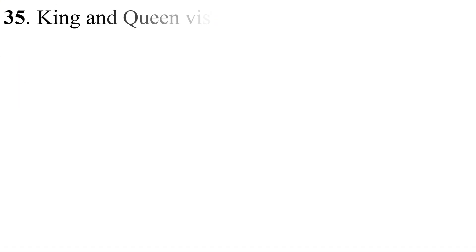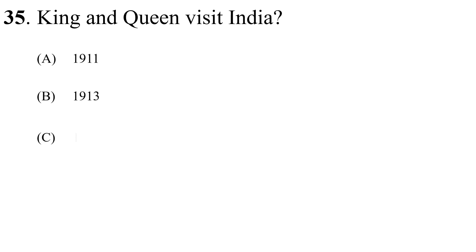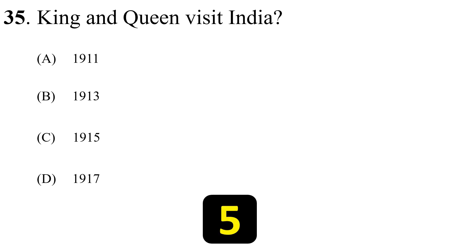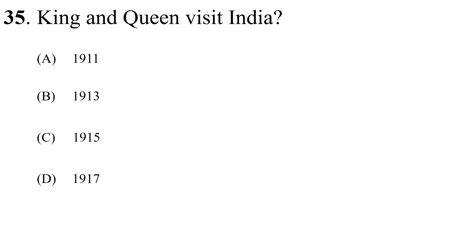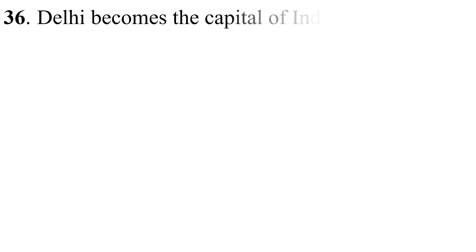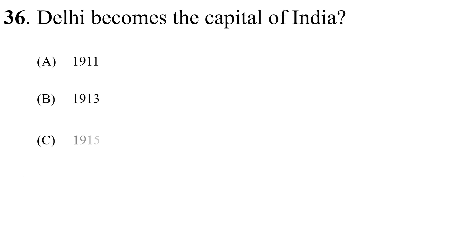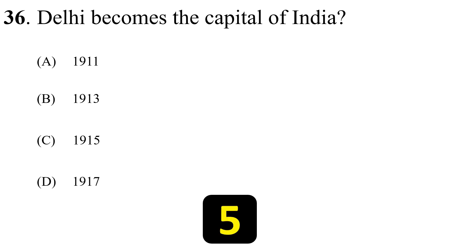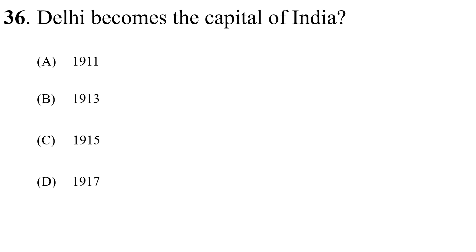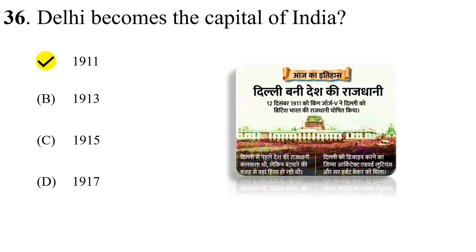Question number thirty-five: King and Queen visit India. Question number thirty-six: Delhi becomes the Capital of India.